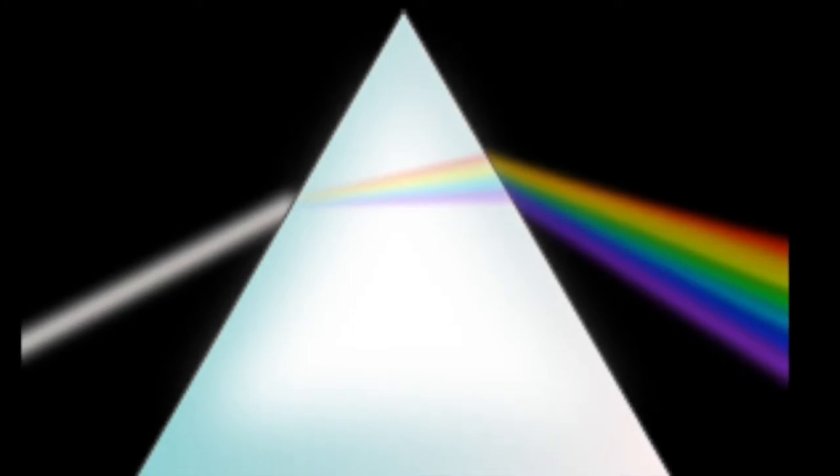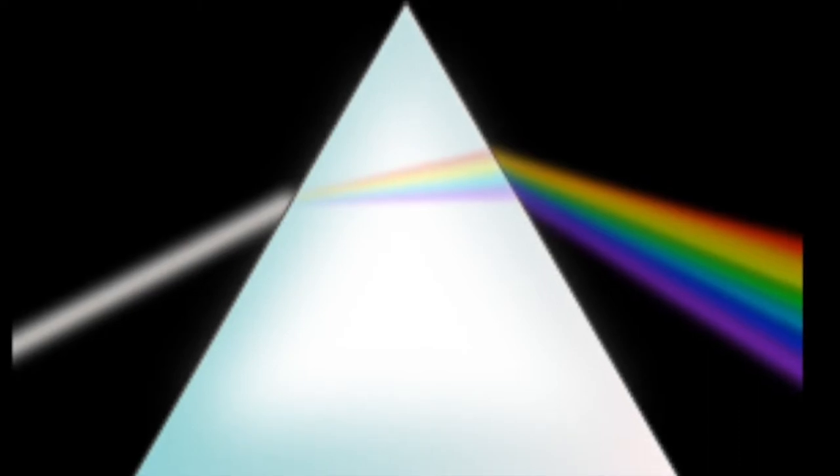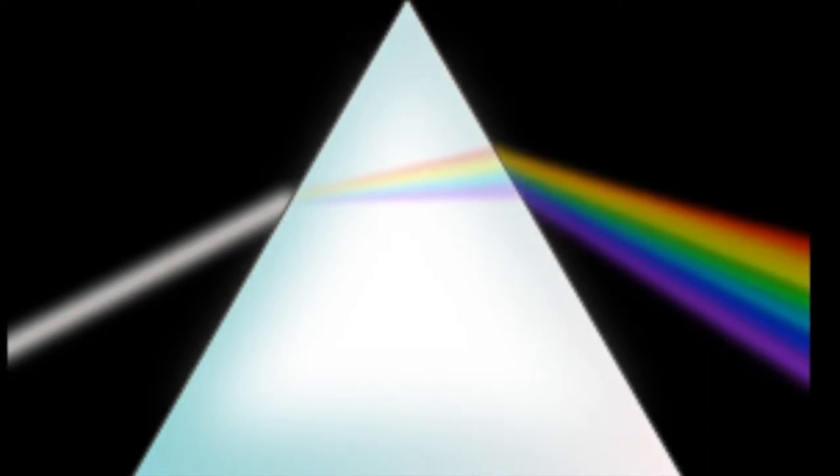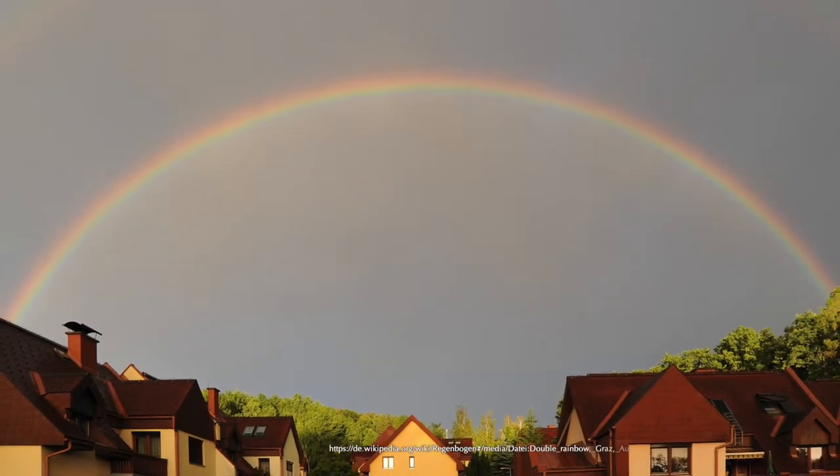The shorter wavelengths, such as violet at about 430 nm wavelength, are refracted more strongly than the longer ones like red, at about 630 nm. The same effect also leads to the formation of rainbows.